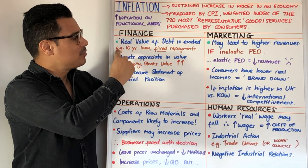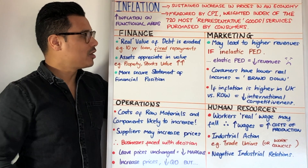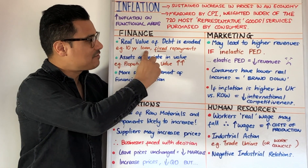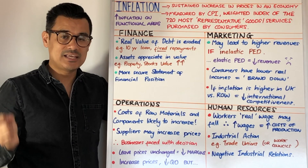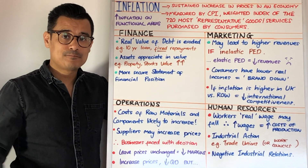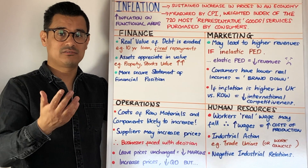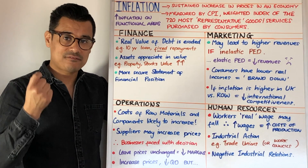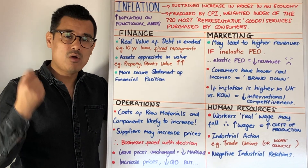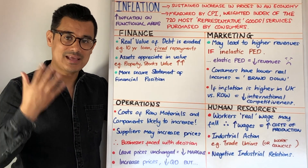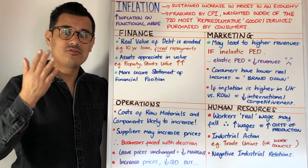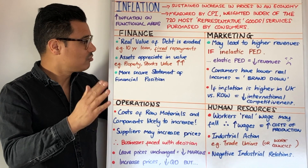Think about it in terms of a 10-year loan a business might have taken out. That loan will have fixed repayments — the same repayment each month. Now if inflation is increasing and prices are going up, that fixed amount you've agreed with the bank is worth less; it has less real value. So therefore the real value of your debt has been eroded.